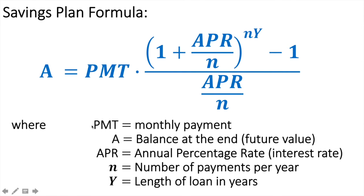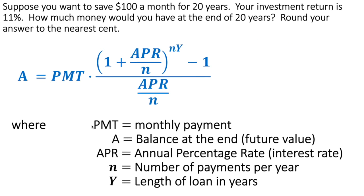Most everything that we deal with is going to be longer than five years. So let's bring in a real-life scenario and actually plug this into the formula. Here's our formula, and this is if we're going to save $100 a month for 20 years. The return is 11%, based off what the stock market return is — the S&P 500 averaging 11%. How much money would we have at the end of 20 years?